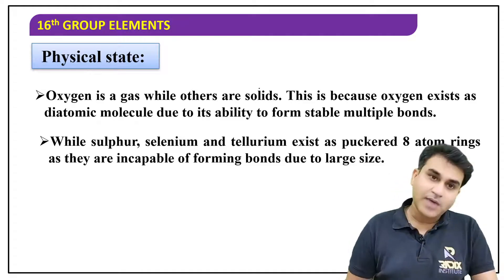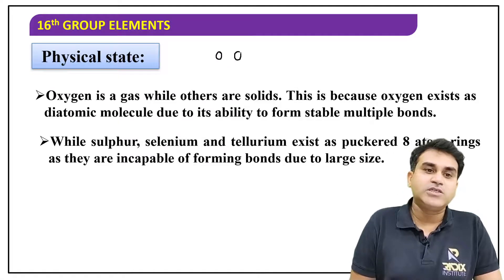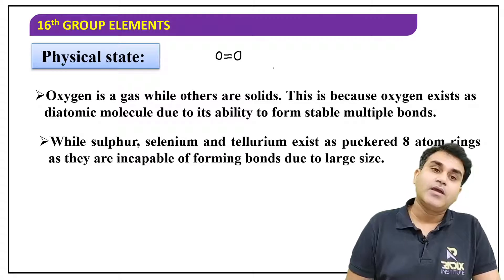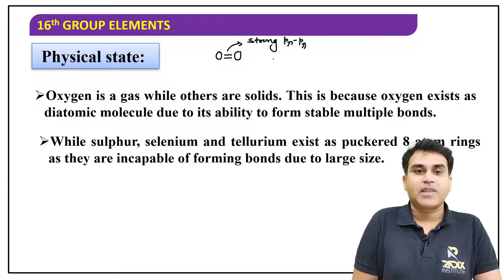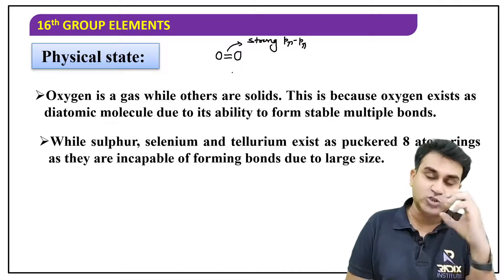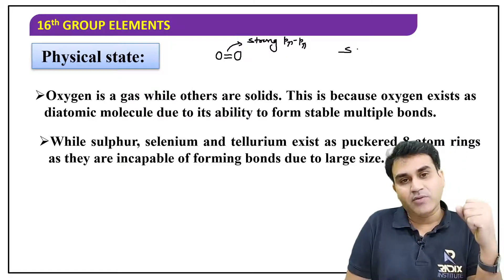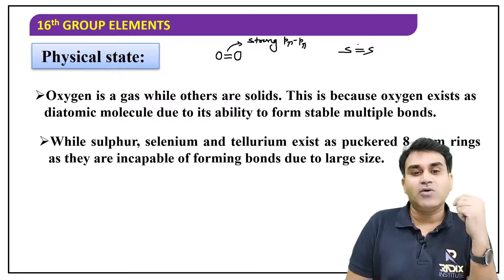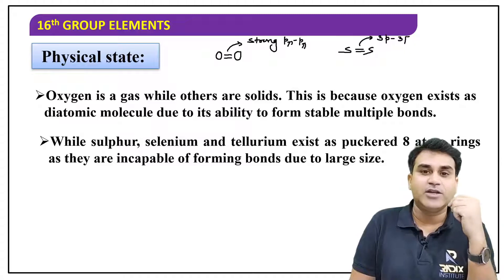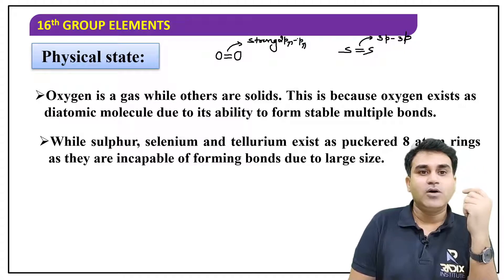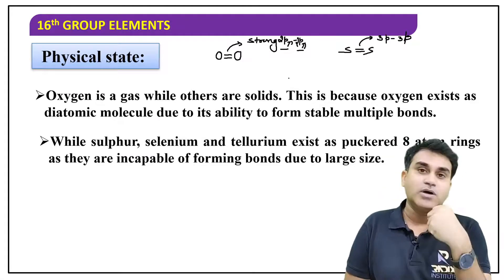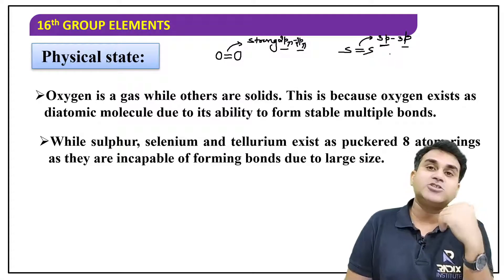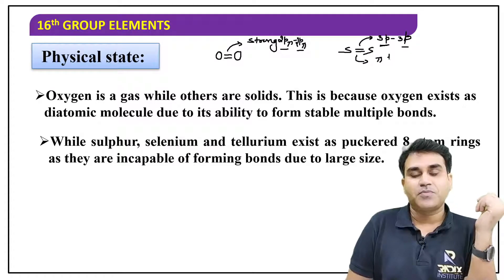Let's understand the logic. Why is oxygen a gas? Because oxygen forms a diatomic molecule. Why does it form a diatomic molecule? Because it has a strong p–π–π bond. One oxygen's 2p overlaps side-by-side with another oxygen's 2p — these are small p orbitals. Why doesn't this happen in sulfur? For sulfur to form a pi bond, 3p and 3p must overlap side-by-side. For 2p–2p overlap, the shell is small, so attraction is more. For 3p–3p, the shell is bigger, so attraction is less — pi bond is very weak.